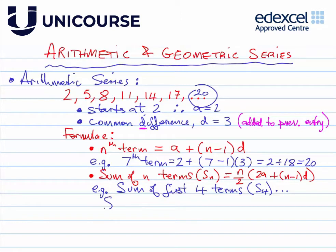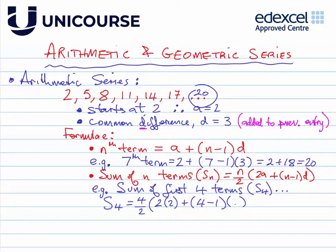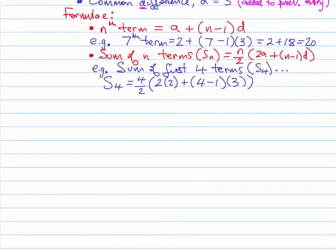We write S-subscript-four and apply the formula. n is four, so we get four over two, multiplied by two times a — where a is two — plus n minus one, which is four minus one, times d, where d is three.